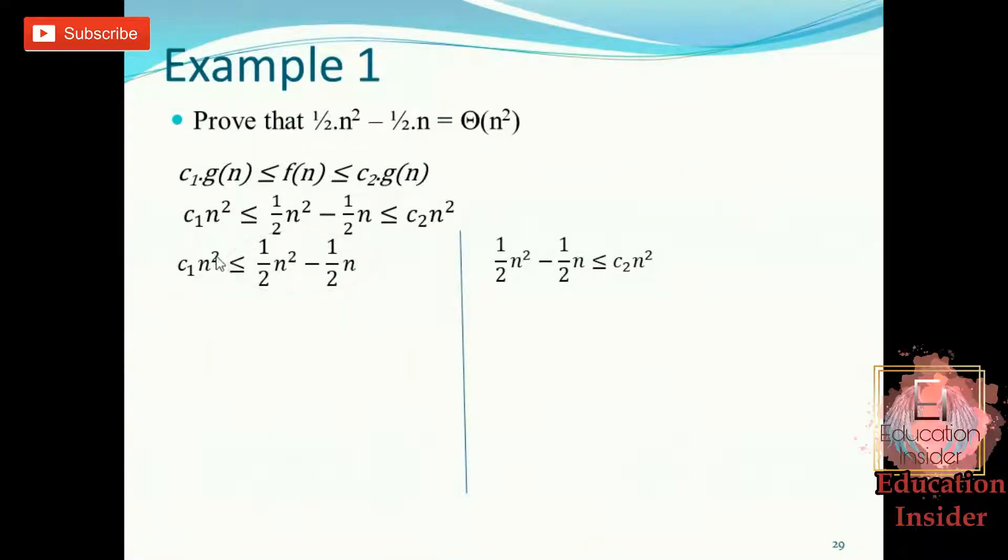So what we need to do here is we need to assume the c₁ value as lesser than this value, so that this thing must be lesser than this whole thing. So let's assume one smaller than this ½, so that means that we have to subtract one from this ½n. So after subtracting ½ by minus 1, we will be getting c₁ value as ¼.